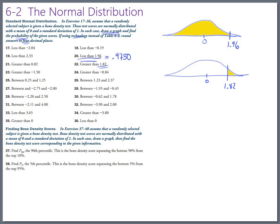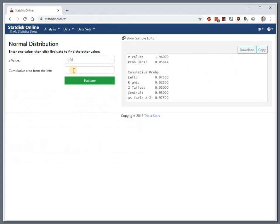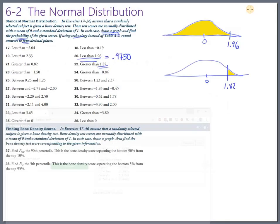And the cumulative area to the right, there, is 0.0344. Okay.